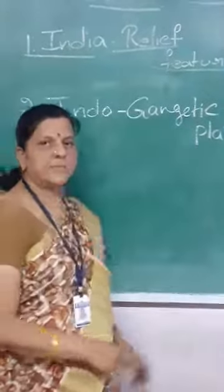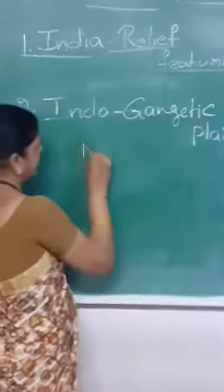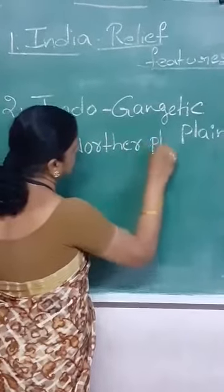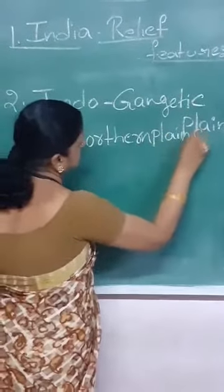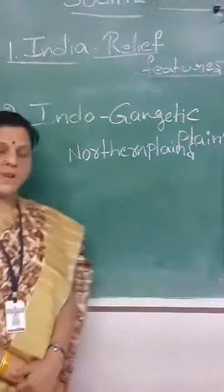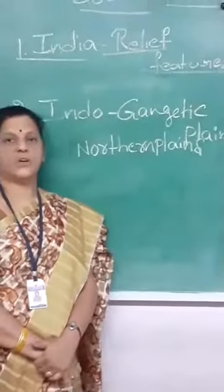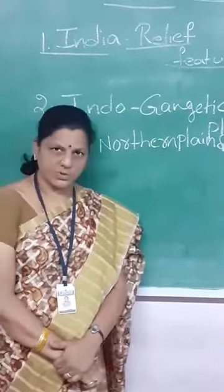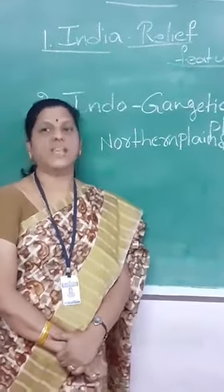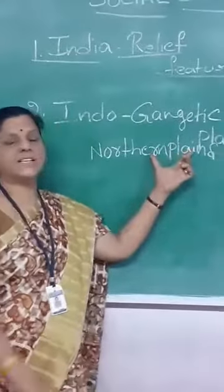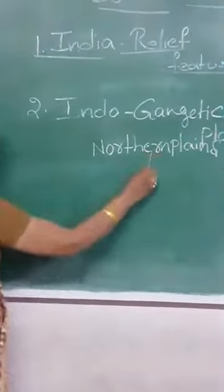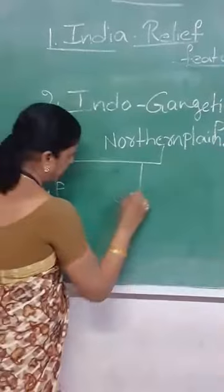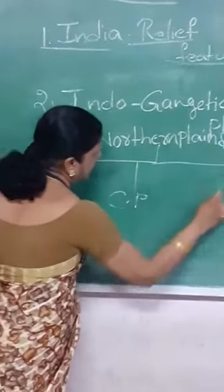Indo-Gangetic Plains is also known as Northern Plains. The Northern Plains is composed of the interaction of three rivers — that is Indus, Ganga, and Brahmaputra. This Northern Plains is divided into three parts: Western Part, Central Part, and Eastern Part.